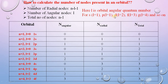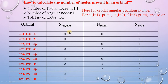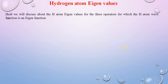For the 4d orbital: n equals 4 and l equals 2. The number of angular nodes equals l equals 2. The number of radial nodes equals n minus l minus 1, that is 4 minus 2 minus 1 equals 1. The total number of nodes equals 2 plus 1 equals 3. Using this formula you can easily calculate angular nodes, radial nodes, and total nodes for any orbital.